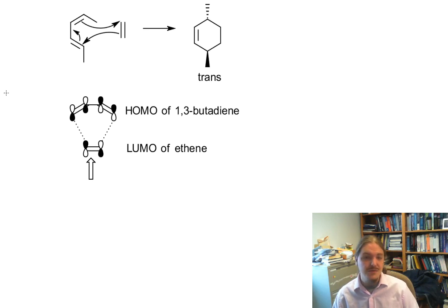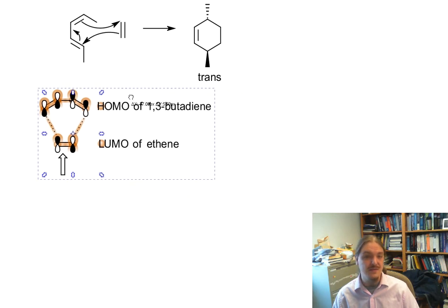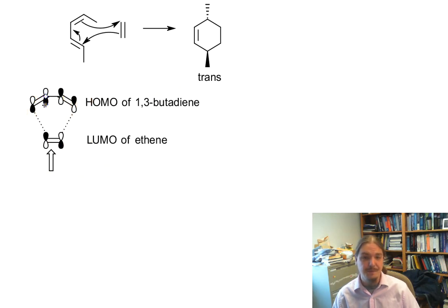I'm going to introduce you to the transition state model I'll use to explain what's going on. I'm showing you the HOMO, the highest occupied molecular orbital of 1,3-butadiene, and the LUMO of ethene as the dienophile. The LUMO is the lowest unoccupied molecular orbital.